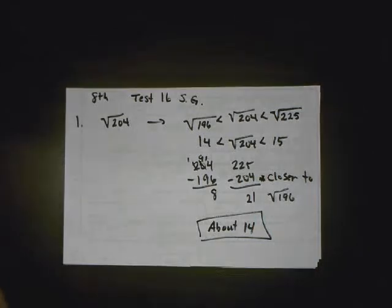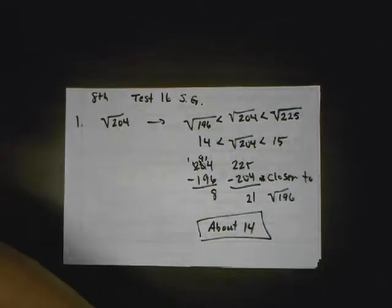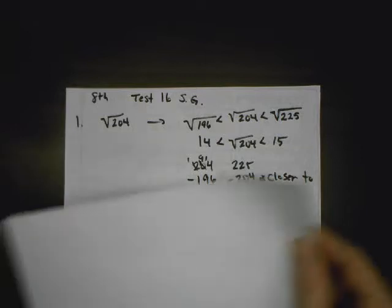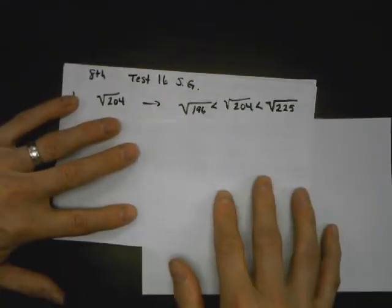8th grade math, test 16 study guide. Problem number 1 says round √204 to the nearest whole number.